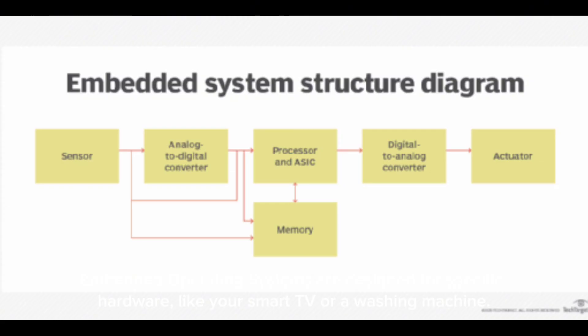Embedded operating systems are designed for specific hardware, like your smart TV or a washing machine. Key difference: RTOS focuses on timing and precision, while embedded systems focus on functionality and hardware integration. Thanks for watching and stay tuned for part two.